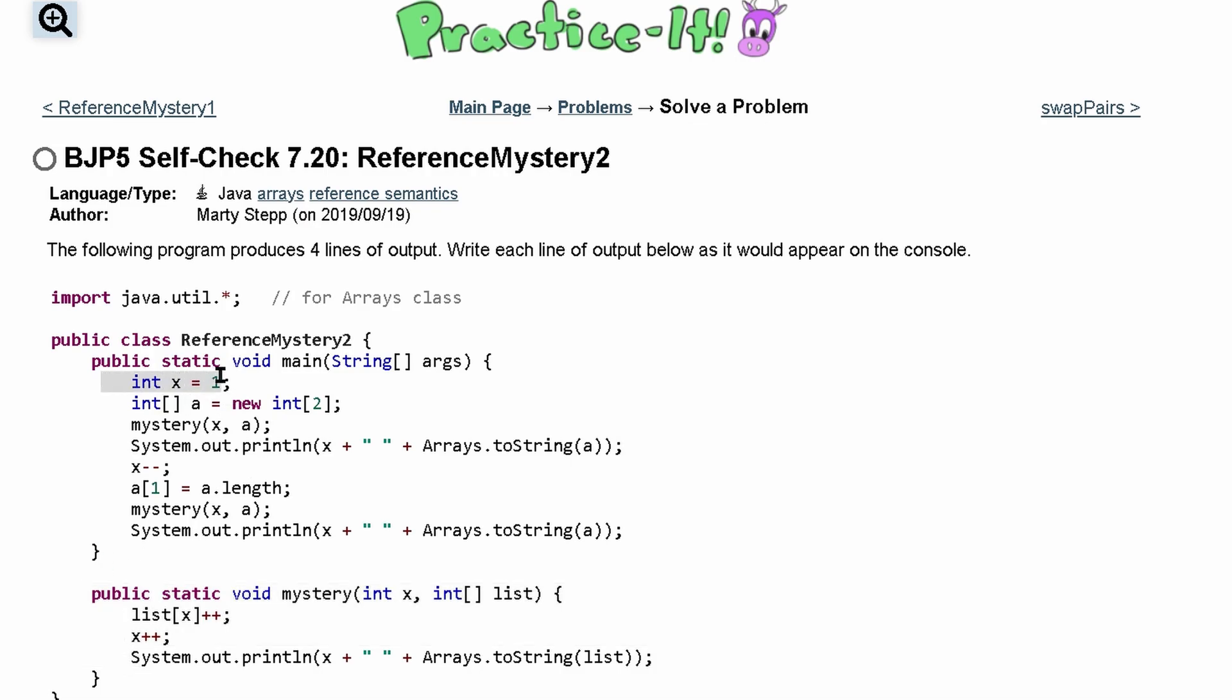We start off with int x equals 1, and then we declare an array of length 2 here. So it's going to have two indexes, 0 and 1, length is 2. We're going to pass this to our function mystery. So we're passing in our integer and we're passing in our array.